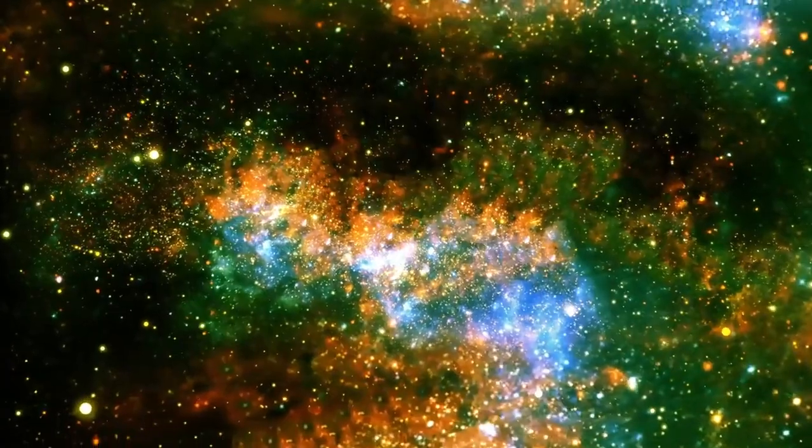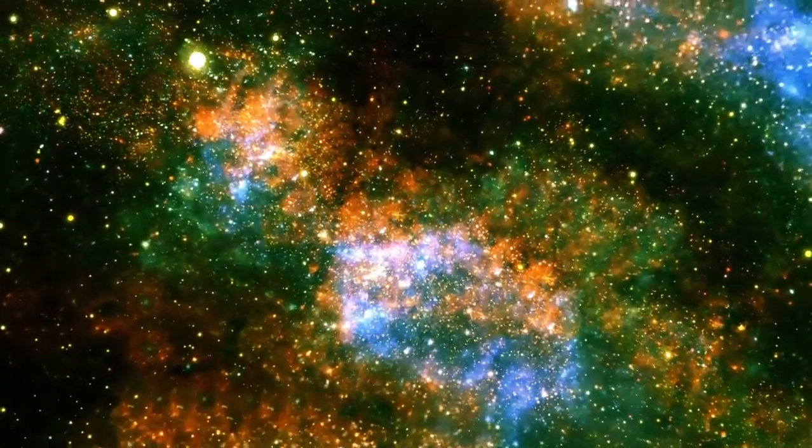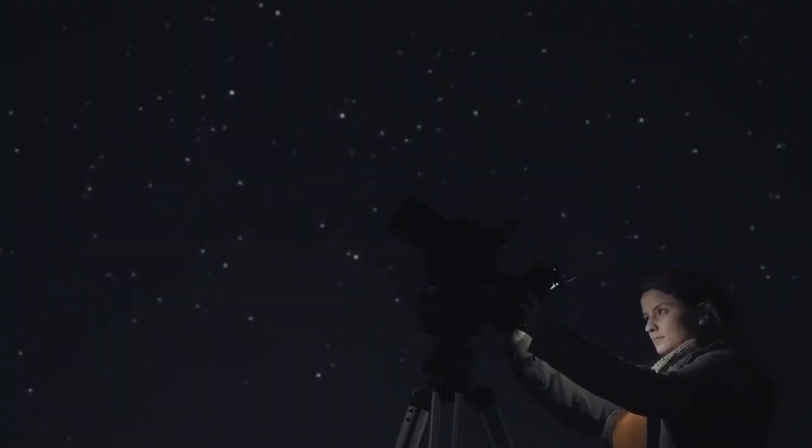Webb had revealed a collection of ancient galaxies, some of them potentially some of the very first ever created. These galaxies were tiny, compact, and softly glowing with the redshifted light of over 13.5 billion years.